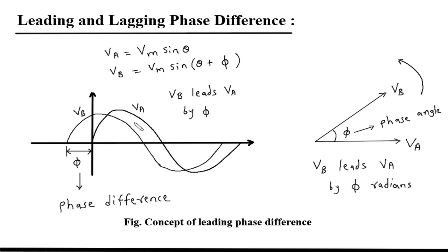Here we can see there are two waveforms Va and Vb. The starting point of Vb is here and the starting point of Va is here, so Vb is ahead of Va. We can say that Vb leads Va by Phi, where Phi is the phase difference. That's why Vb is leading Va by phase difference Phi.